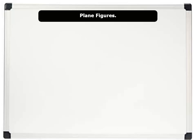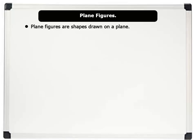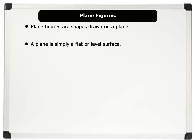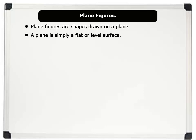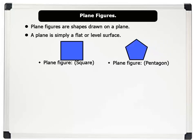Plane figures are figures or shapes drawn on a plane. And a plane is simply a flat or level surface. For example, these shapes on the board — a square and a pentagon — are examples of plane figures.